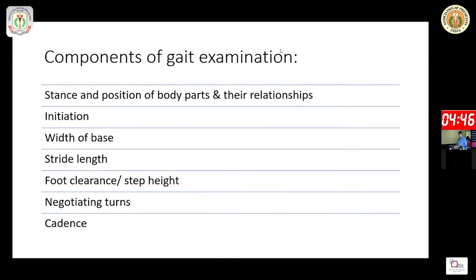We all know about the rocket sign, which happens in PSP, in which the patient, due to motor impulsivity, suddenly gets up and falls backwards. The next steps are to check the stance, the initiation of gait, the width of the base, the stride length, the foot clearance, the turn negotiation, and cadence.